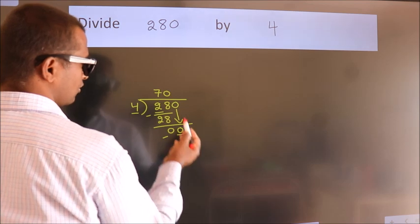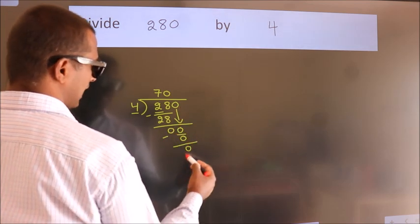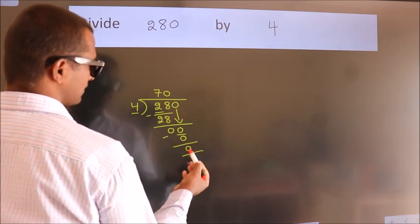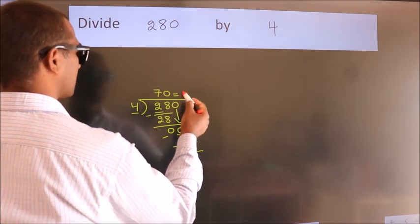After this, no more numbers to bring down. And we got remainder 0. So this is our quotient.